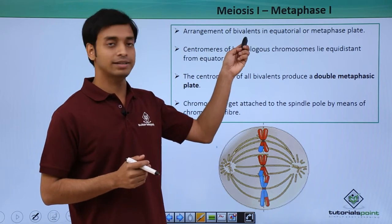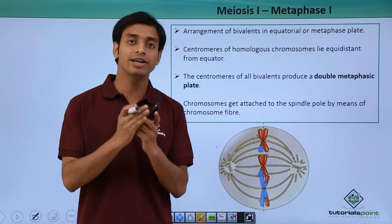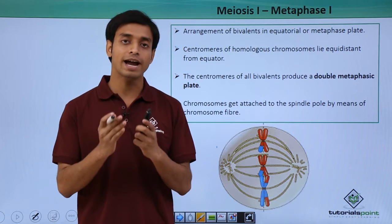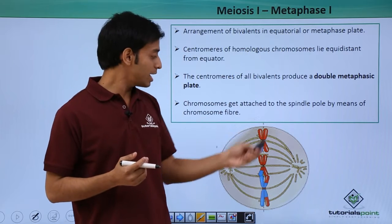Here, the arrangement of bivalents occurs in the equatorial or metaphase plate. Initially in prophase, bivalent formation had taken place because the homologous chromosomes had come together and paired. These bivalents now arrange themselves at the equatorial position.